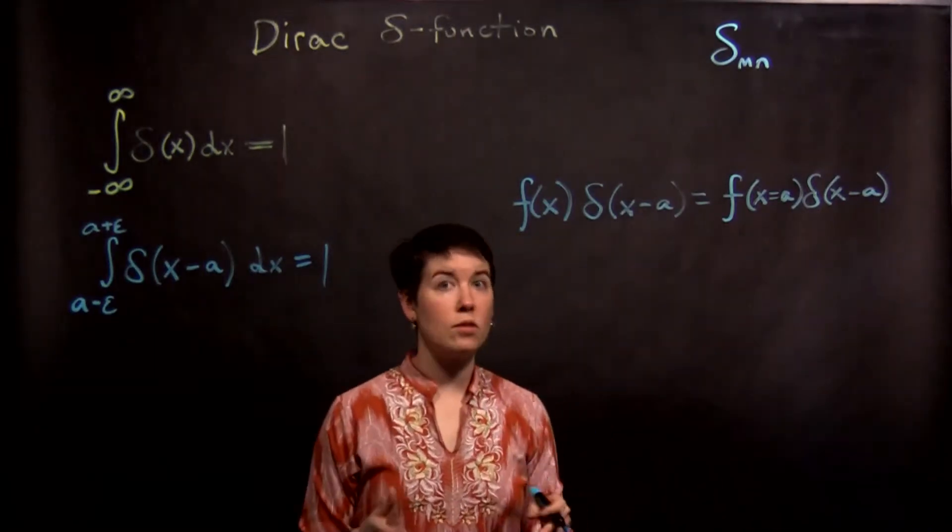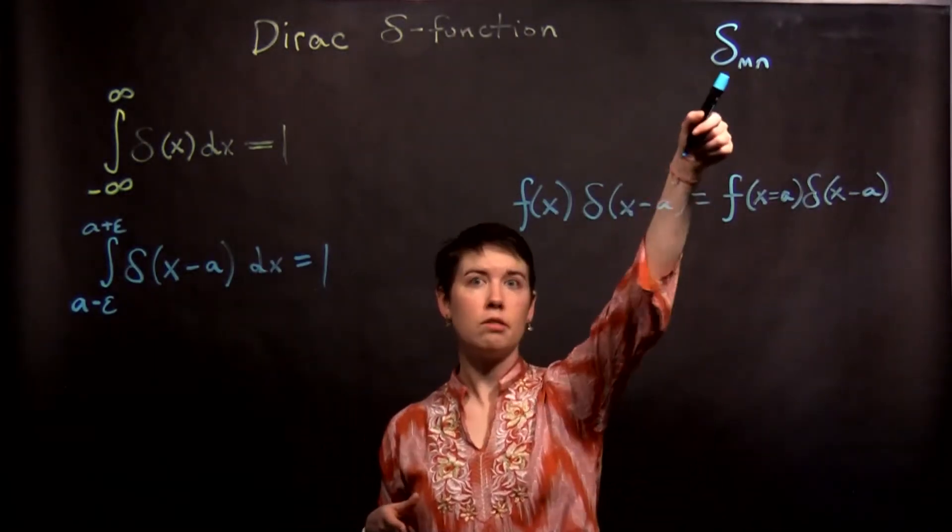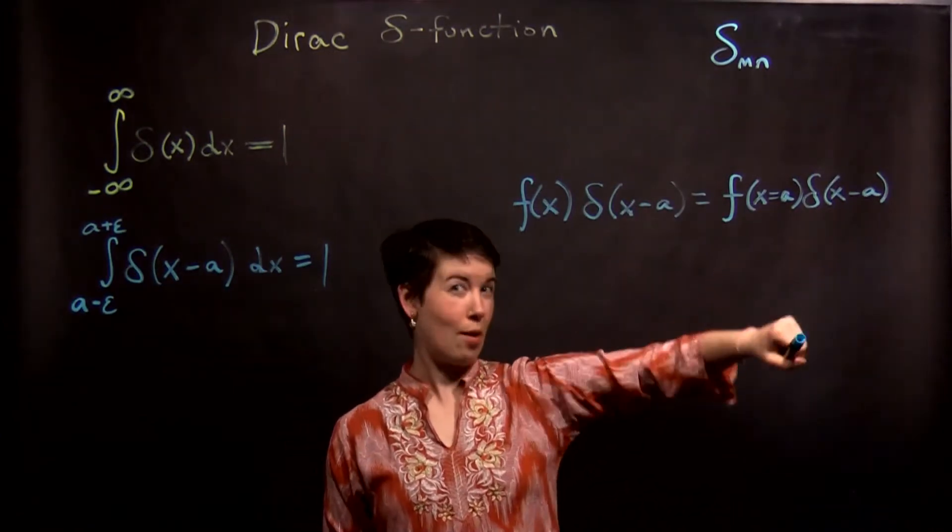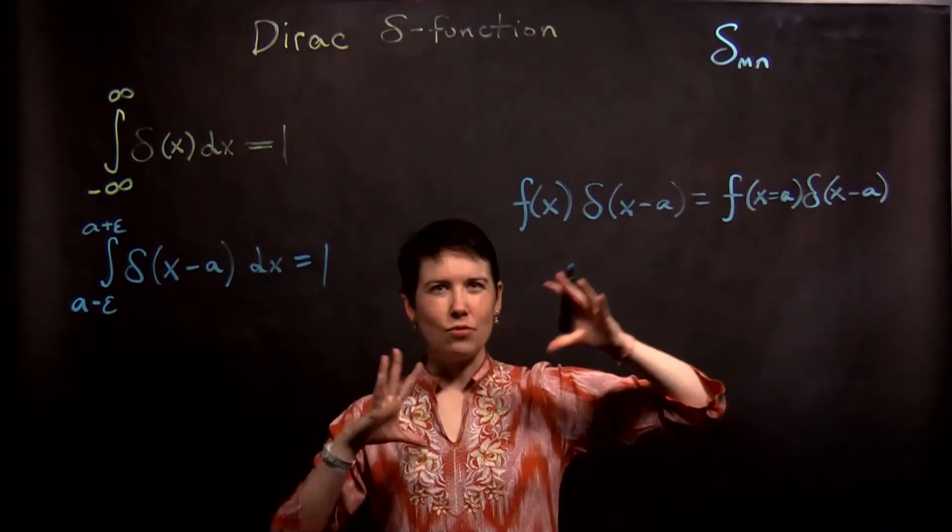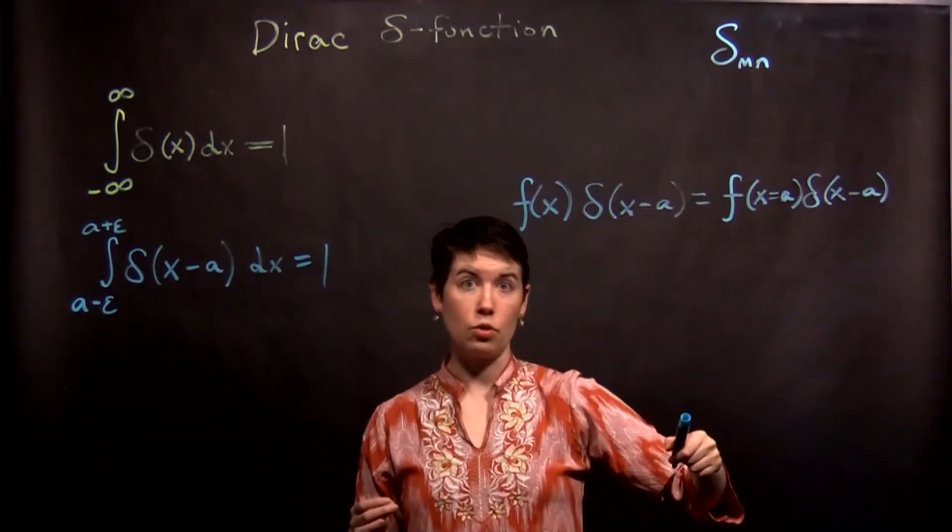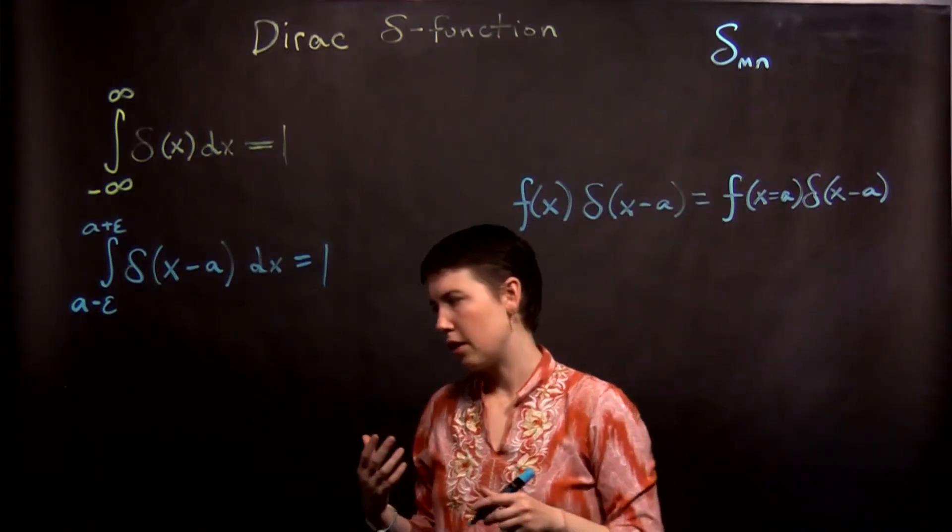So that's one of the ways where this is quite different from the Kronecker delta function, is that until you do the integral, you don't normally get to just drop it. Don't drop your delta function, your Dirac delta function, until you've done the integral. But usually we do try to make it go away.